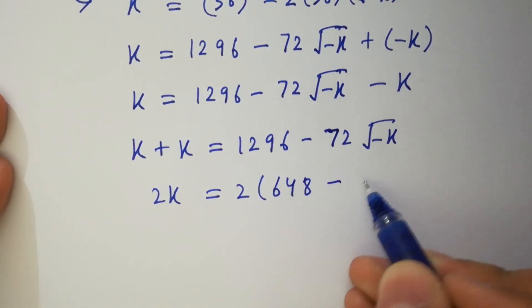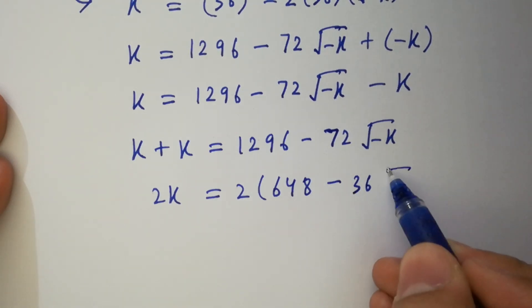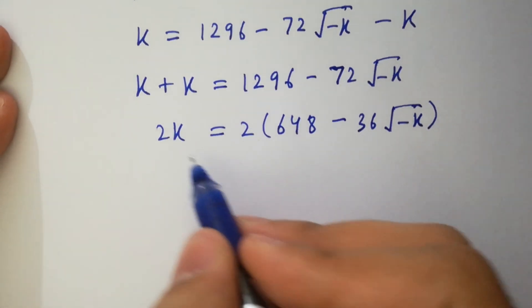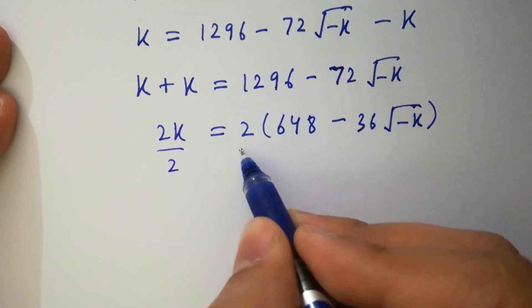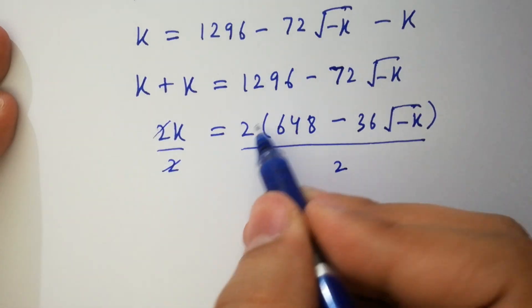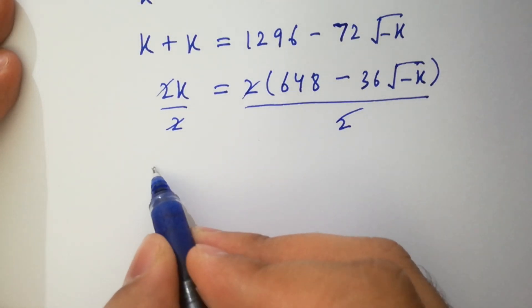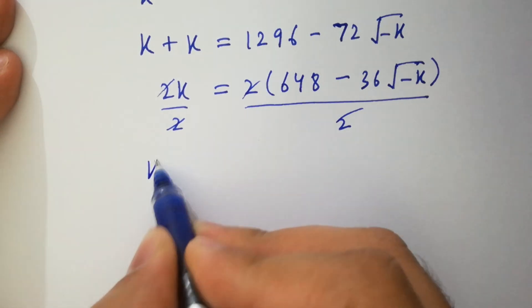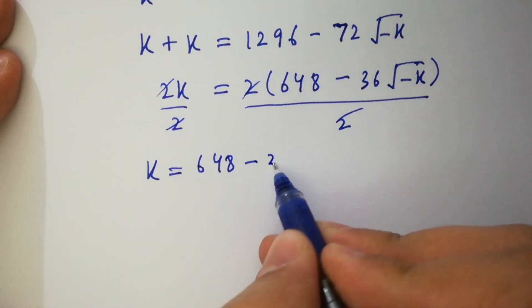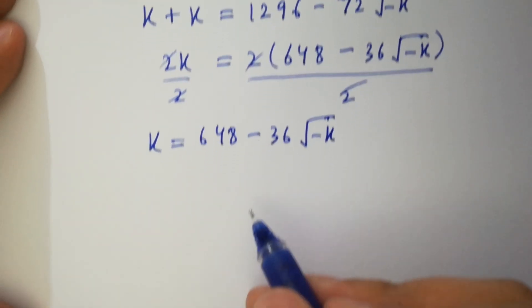We can divide both sides by 2. The 2s cancel, and we have k equal to 648 minus 36 square root of minus k.